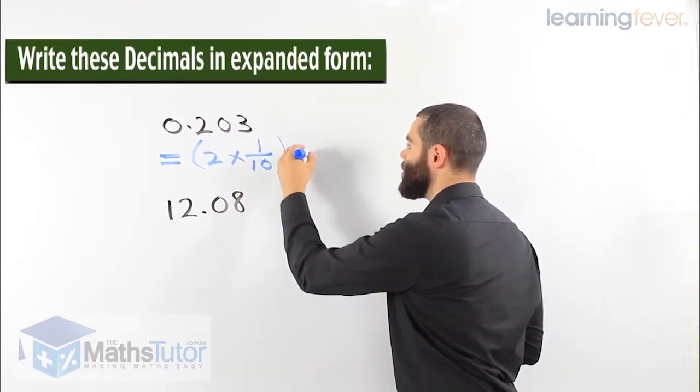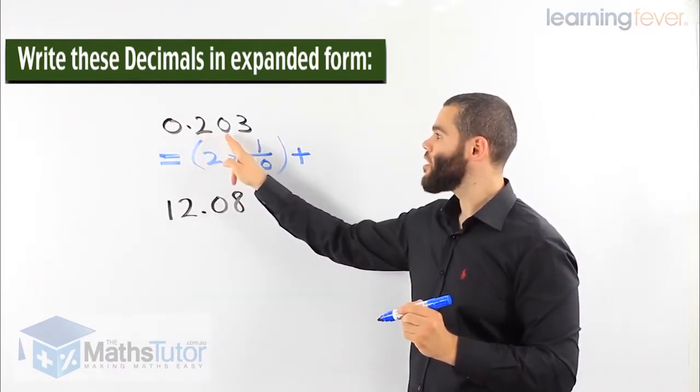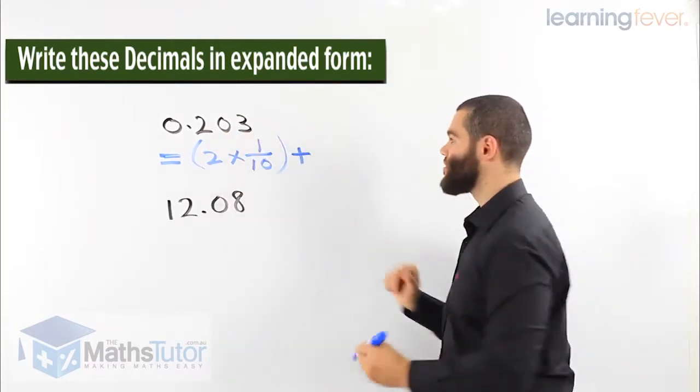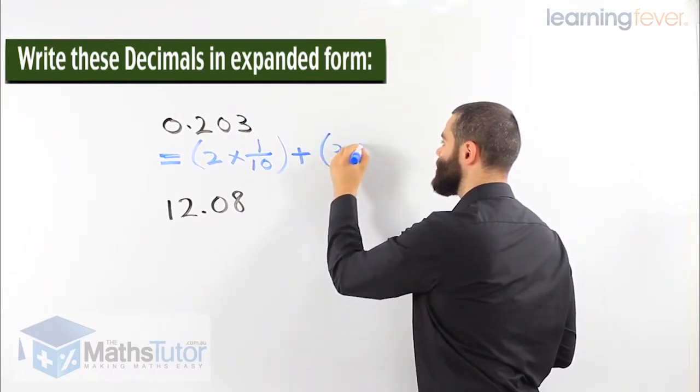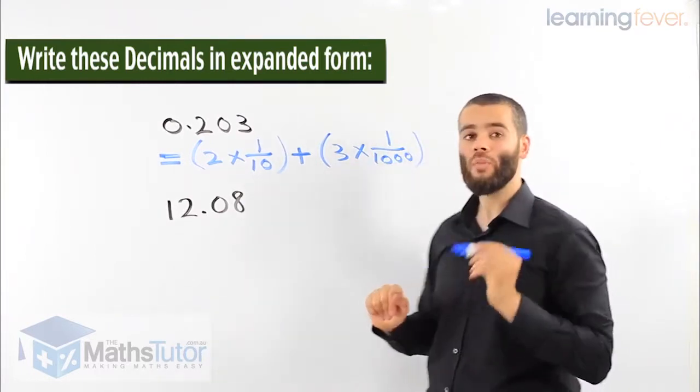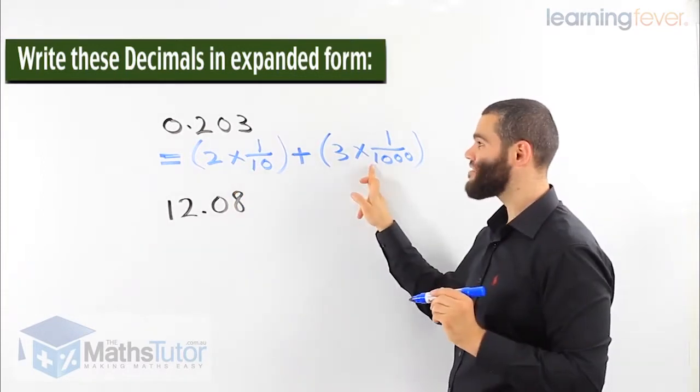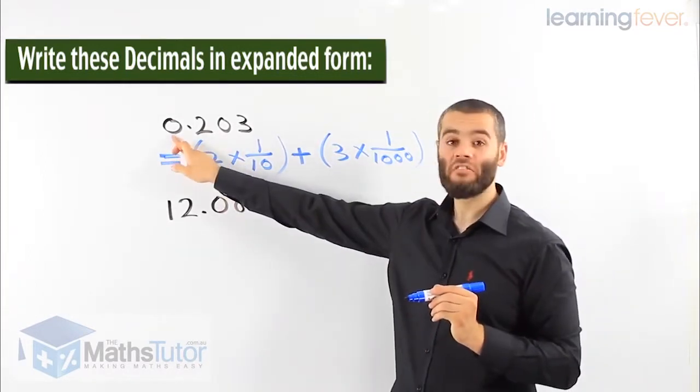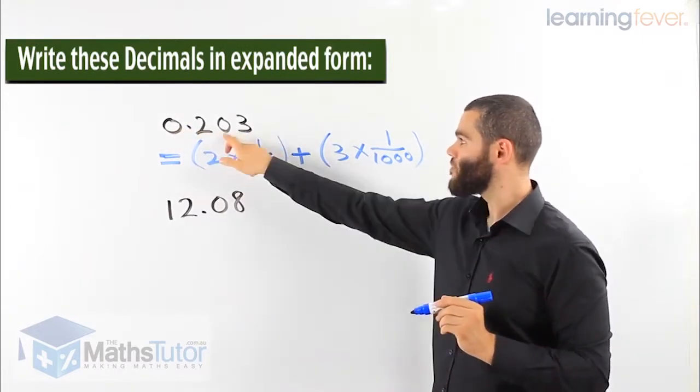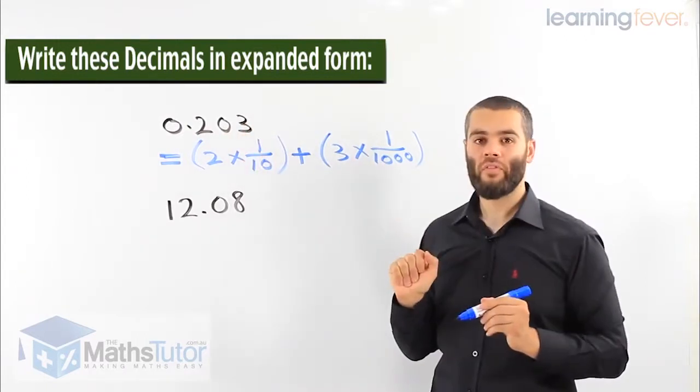Then we notice we don't have a hundredth number. We have the tenth. We don't have a hundredth. So we skip it straight away and we move to the thousandth. So 3 times 1/1000. So straight away by looking at it, I have a tenth and I have a thousandth. I don't have a whole number, it's zero. I have a tenth. I don't have any hundredth. So I put a zero. And my 3 is the thousandth column.